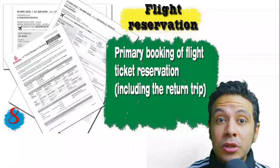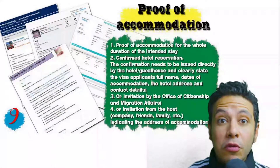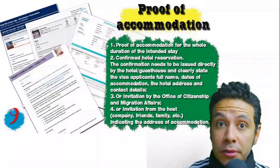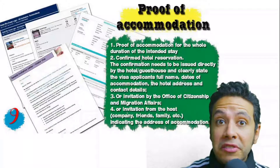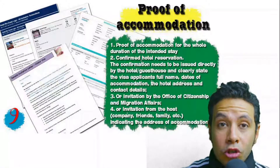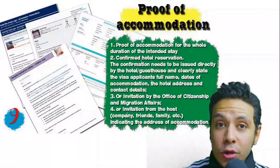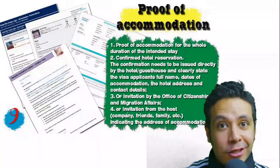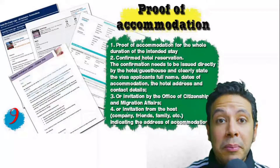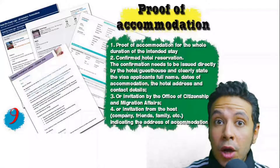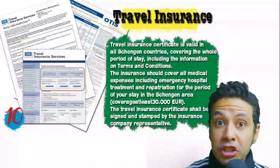You should also provide a flight reservation — an initial booking is usually sufficient, though in some cases a confirmed booking is required. This must include a return ticket. You will also need proof of accommodation, such as a confirmed hotel reservation, an invitation from a host, or an invitation from an organization. For a hotel or hostel, an initial booking is acceptable, but the name, address, and contact number must be mentioned.